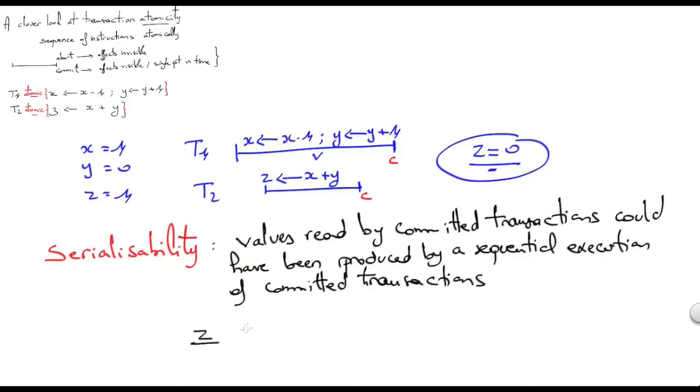So either T1 and T2 or T2 and T1. In both cases, z should be 1. This value of z equals 1 is considered a good value with respect to serializability.